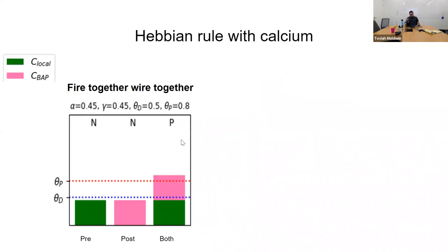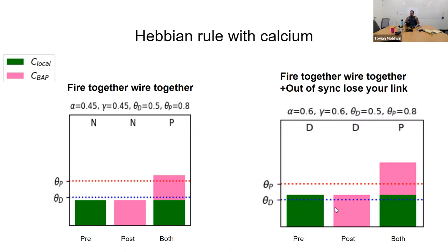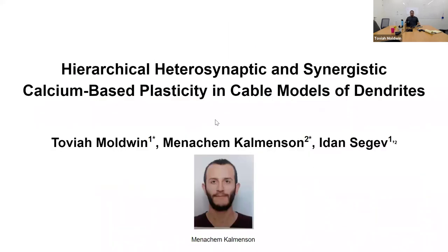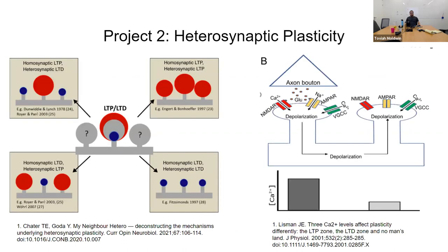A simple example is Hebbian learning. You set the coefficients such that local calcium alone or a postsynaptic spike alone give calcium below the depression threshold, but both together sum above the potentiation threshold — giving you 'fire together, wire together.' You can also get 'out of sync, lose your link' by raising the individual ones above the depression threshold. You can do many other learning rules with this framework: the perceptron with a supervisor, homeostatic plasticity (the Calcitron), and finally a project with Menachem Kalmanson on heterosynaptic plasticity.